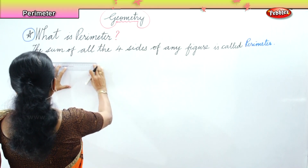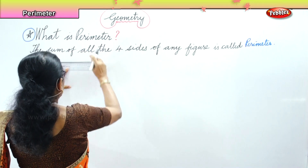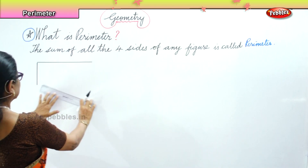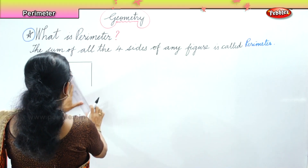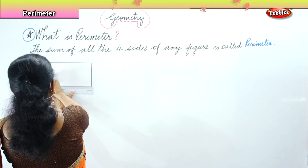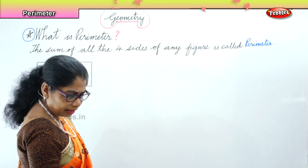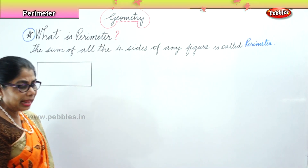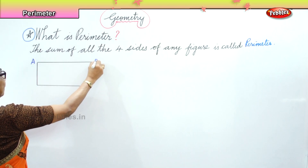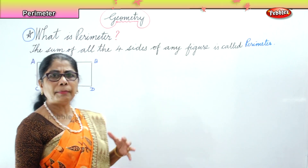So what is perimeter? The sum of all the four sides of any figure. Now let's look at a figure that I'm going to draw. Here I have a rectangle, and I name the points as A, B, C, D. Now to find the perimeter of this rectangle, what do I do?